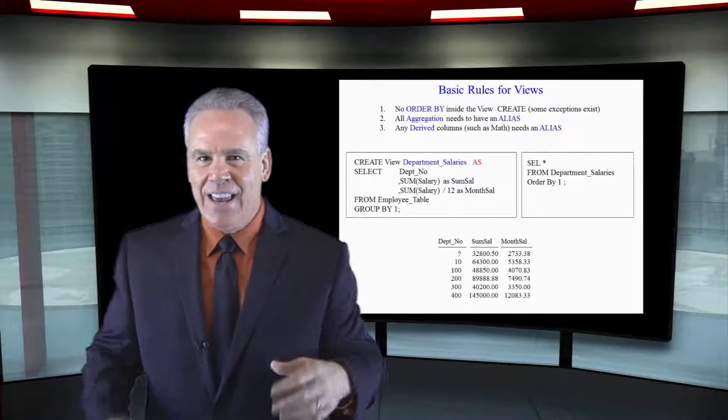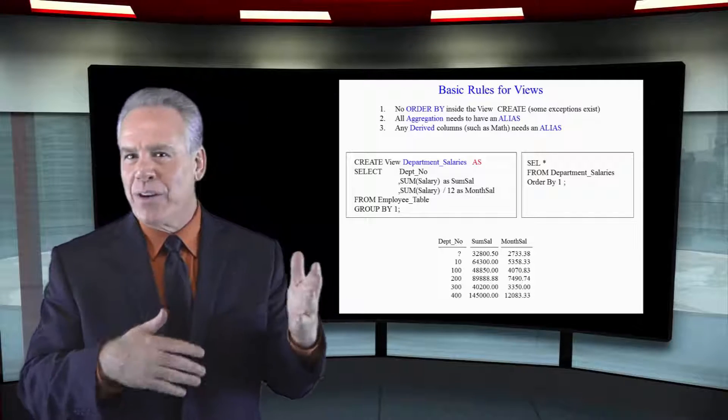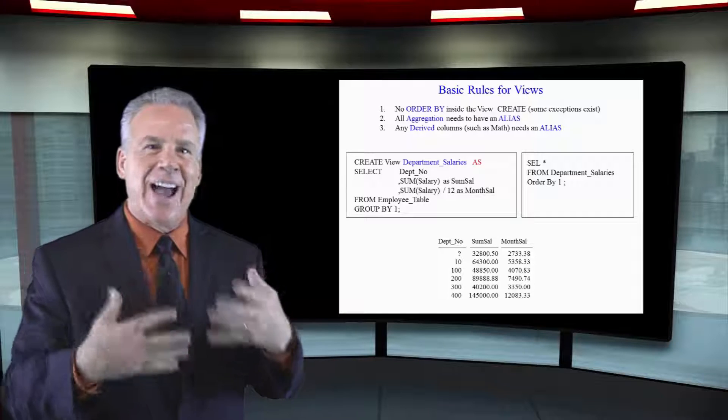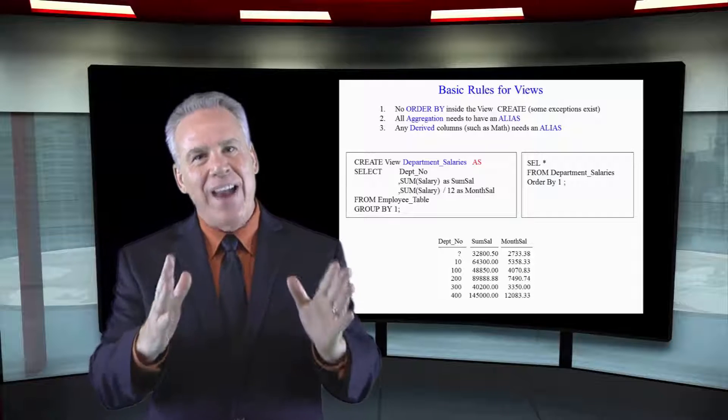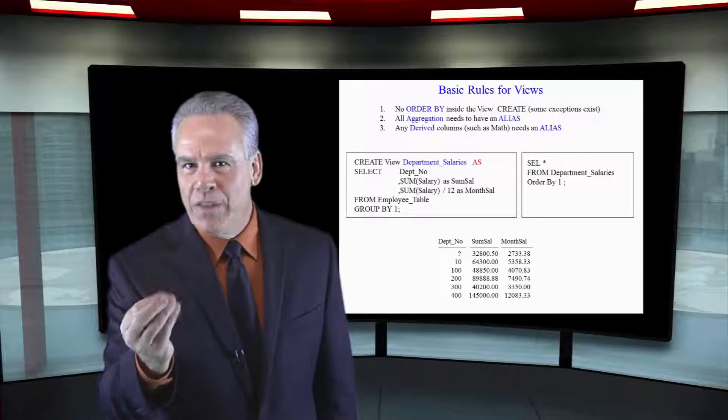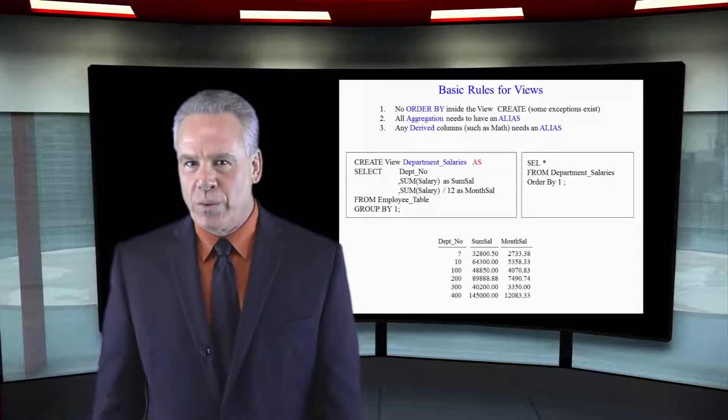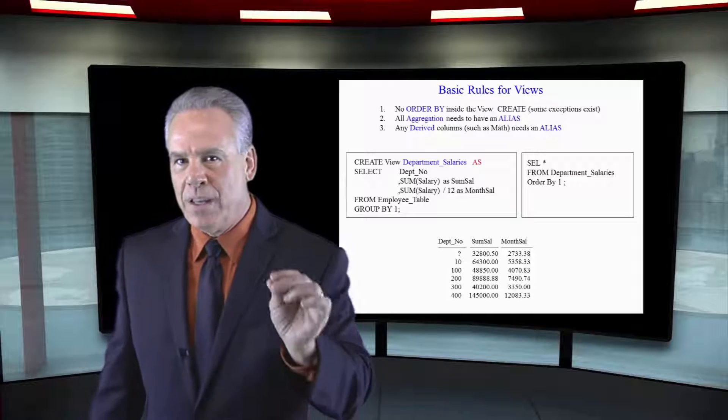And lastly, if you have any derived columns, such as math, salary divided by 12, anything that's a calculation or a derived column, you're going to come up with another alias for that. Those are your three rules. Let's take a look at them in effect.